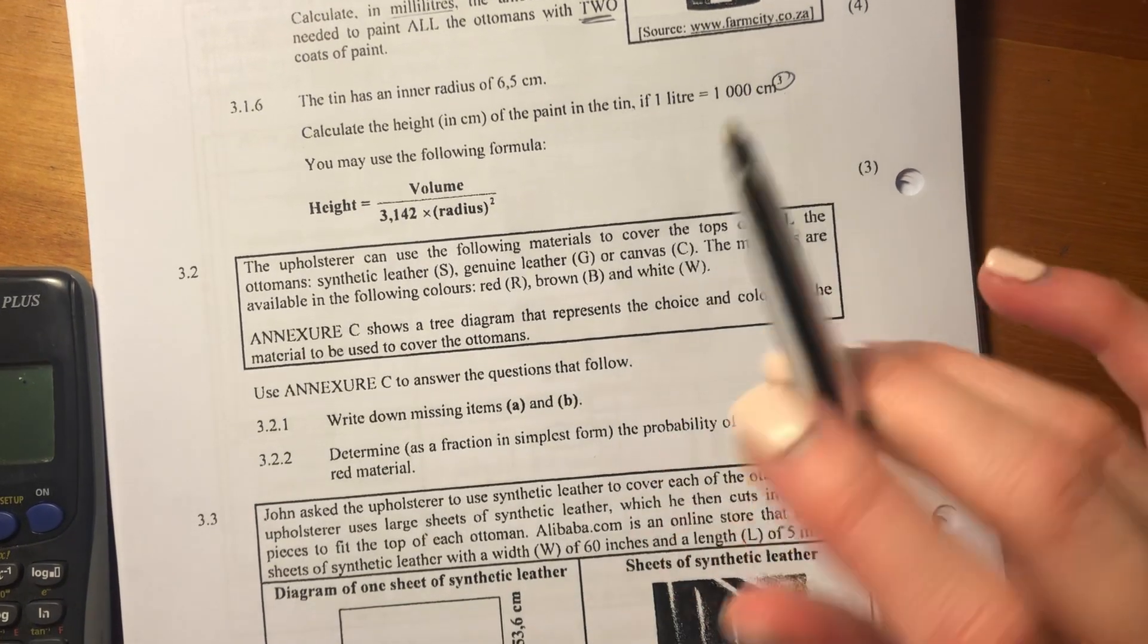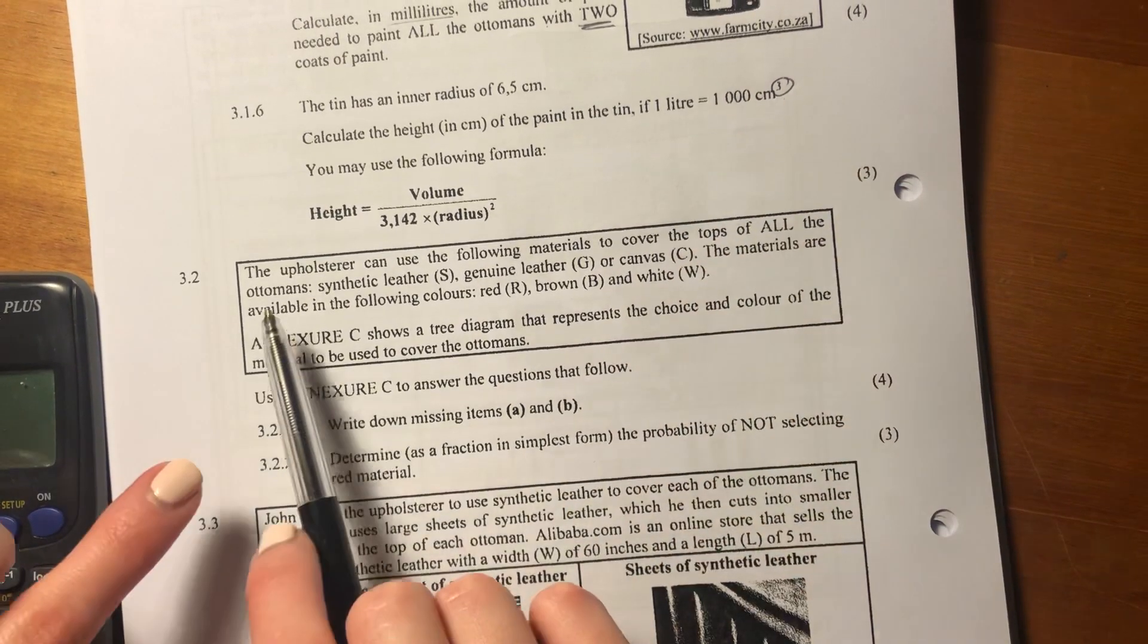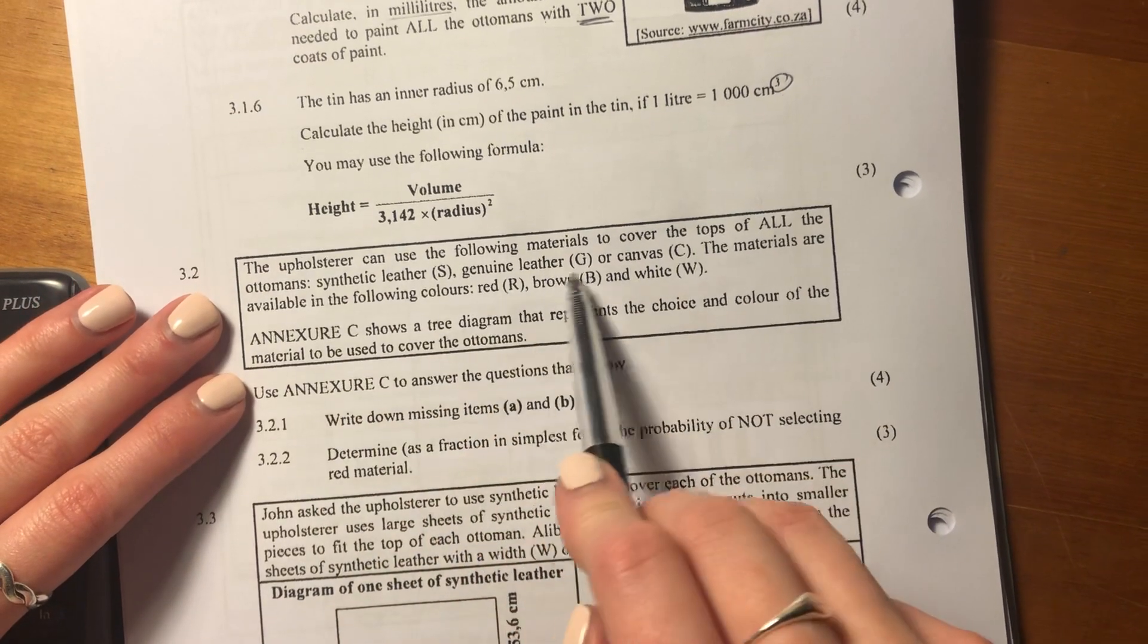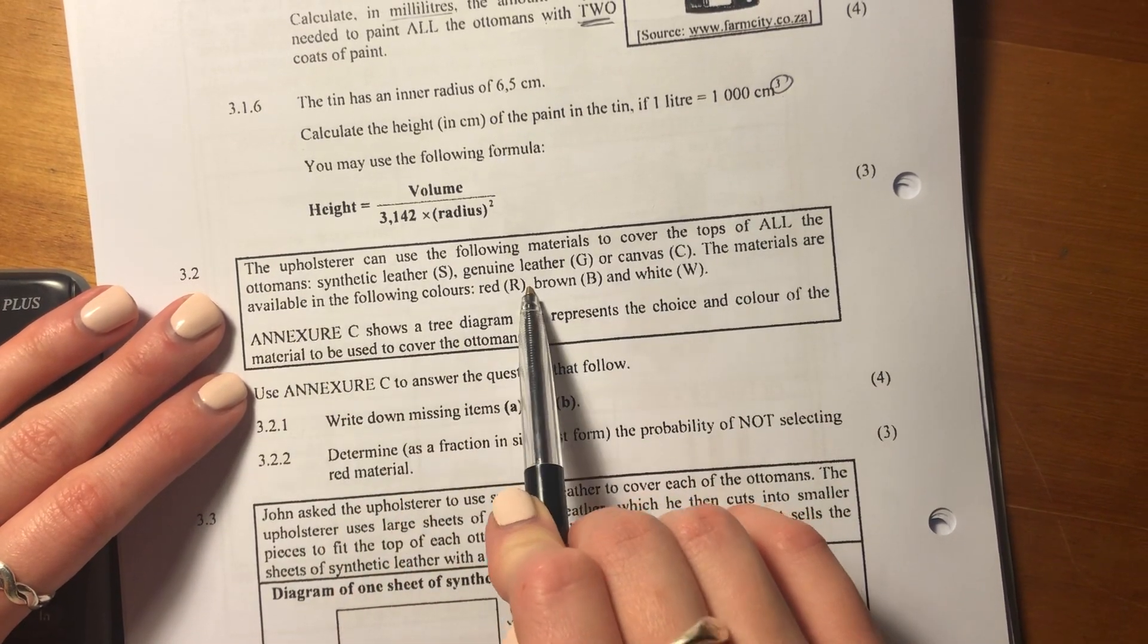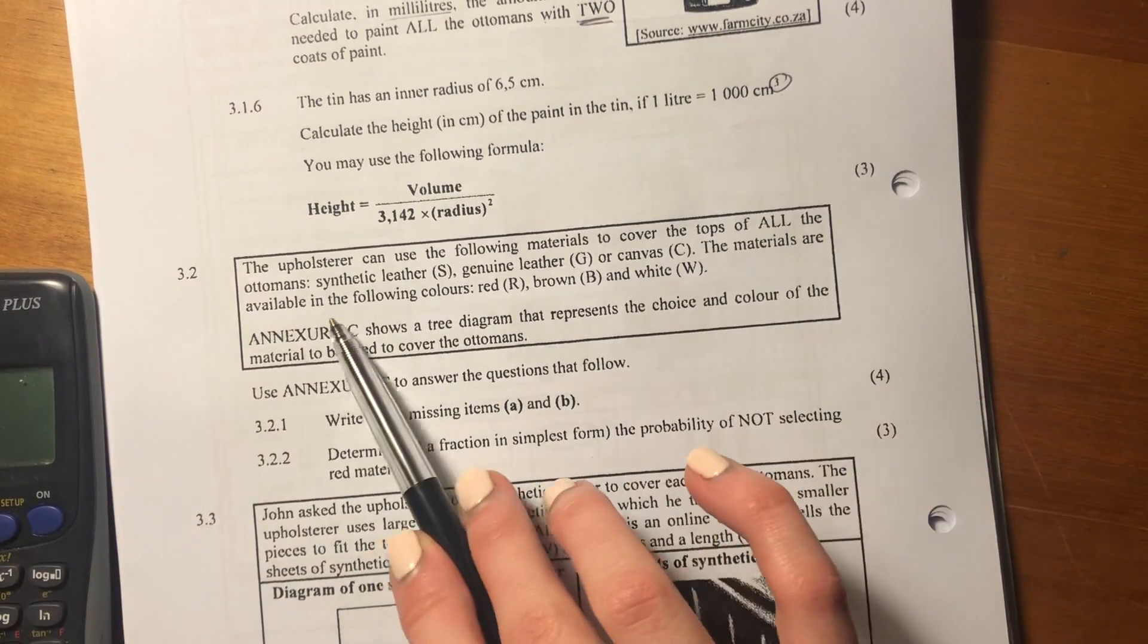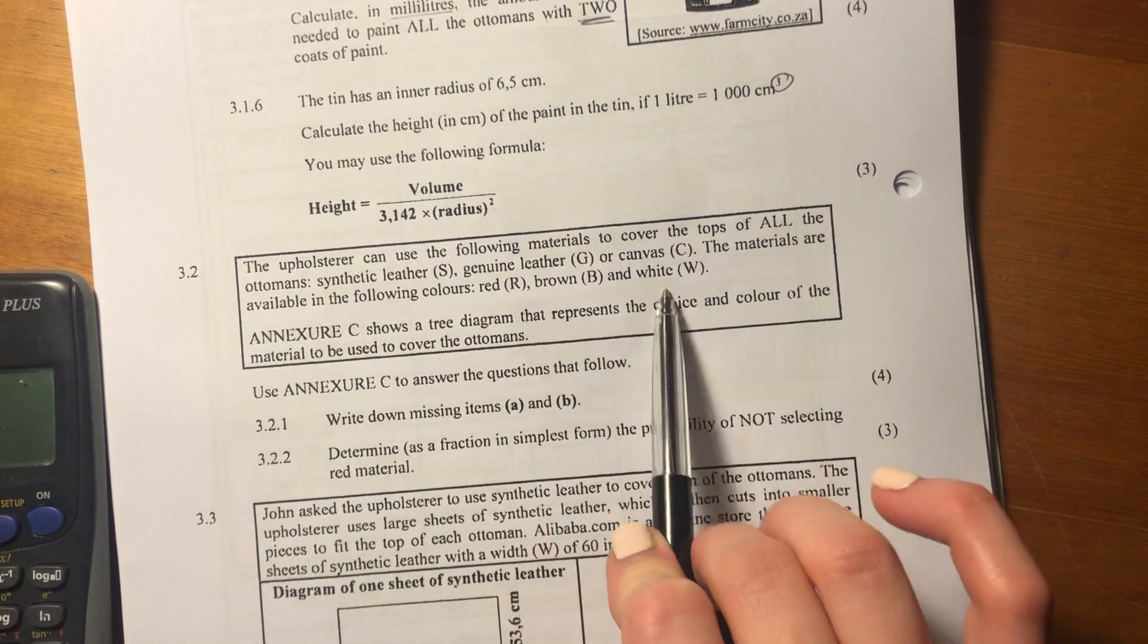Hey guys, let's now move on to 3.2. The upholsterer can use the following materials to cover the tops of all the Ottomans: synthetic leather, genuine leather, or canvas. The materials are available in the following colors: red, brown, and white.